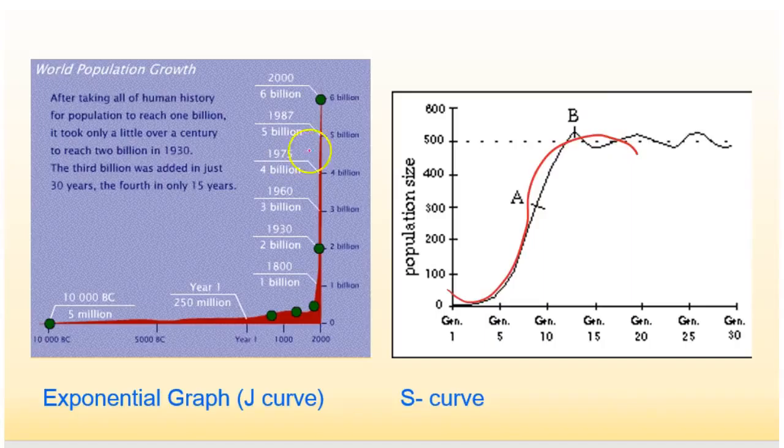So limiting factors like food and disease and water will actually stop an exponential graph and turn it into an S curve quite quickly in nature.